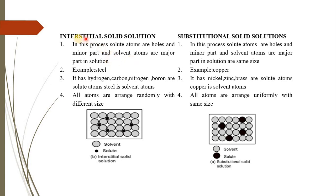There are two types of solid solution. In a substitutional solid solution, solute atoms replace solvent atoms of similar size. In an interstitial solid solution, smaller solute atoms fit into the gaps between larger solvent atoms. An example of interstitial solid solution is steel — where hydrogen, carbon, nitrogen, and boron atoms dissolve in iron. An example of substitutional solid solution is copper mixed with nickel, zinc, forming brass.